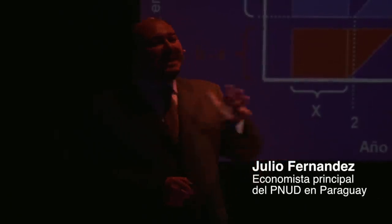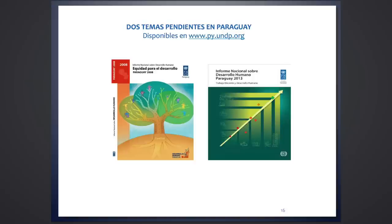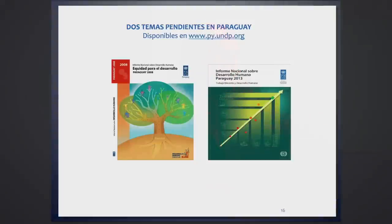No existe ninguna excusa para un país que produce y exporta y alimenta a 50 millones, no puede tener desnutridos. Los últimos dos grandes informes sobre desarrollo humano en Paraguay tienen que ver con la equidad para el desarrollo, generado por el PNUD en 2008, y el último sobre trabajo decente. Ambos tienen recomendaciones de políticas y un diagnóstico de cuáles son las deudas que tenemos en Paraguay. La base de todo tiene que ver con la nutrición, porque eso afecta la salud, la educación y la productividad, las mismas dimensiones del índice de desarrollo humano. Concluyo diciendo: un país que produce para 50 millones de personas durante un año no tiene excusas para tener desnutridos entre su población. Muchas gracias.